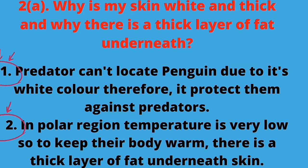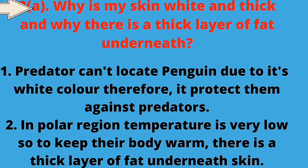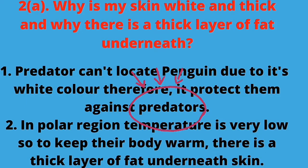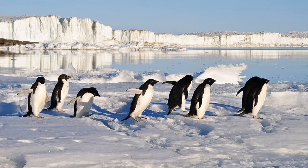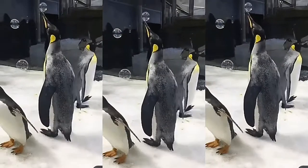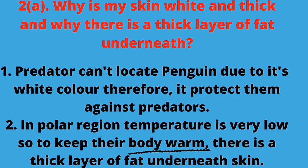The question is: why is the penguin's skin white and thick, and why is there a layer of fat underneath? Penguin's white color helps because the big animals that eat penguins — which we call predators — cannot find the birds. So the white color protects them from predators. Secondly, the temperature is very low, so the fat layer keeps their body warm.